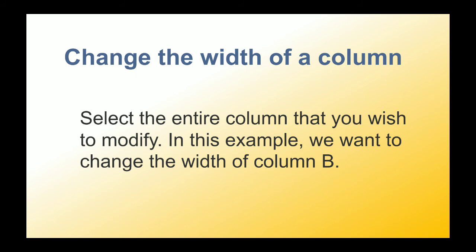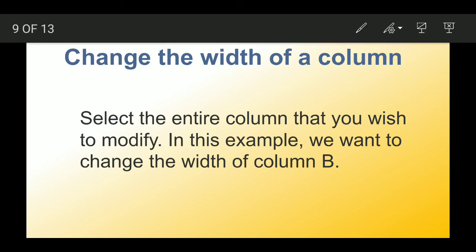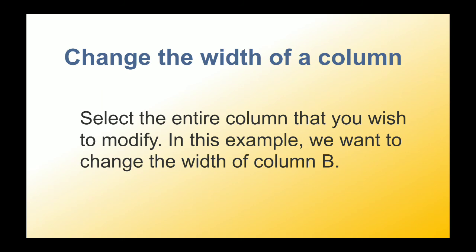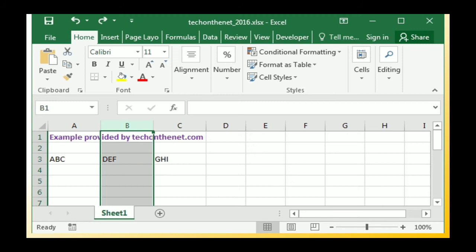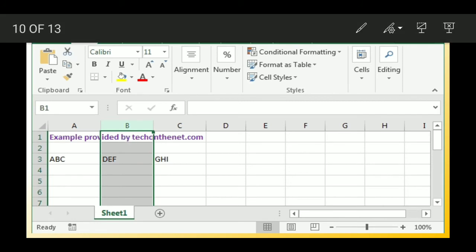Now let's move to the next topic: changing the width of a column. There are two cases — if we have a row we can change the height of the row, and if we have a column we can change the width of the column. The first step is to select the entire column you wish to modify. In this example we want to change the width of column B, so we select that column by clicking on its column header.